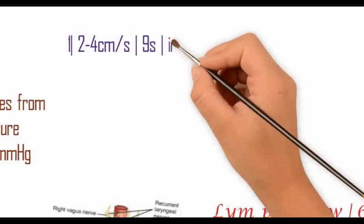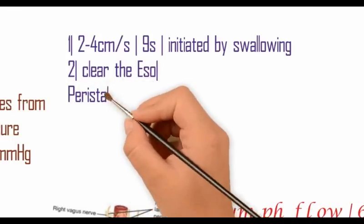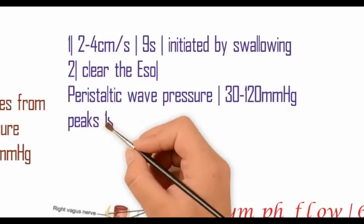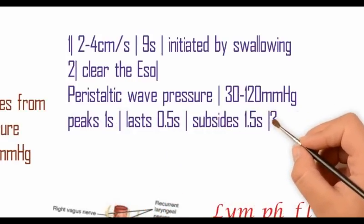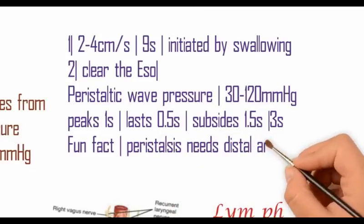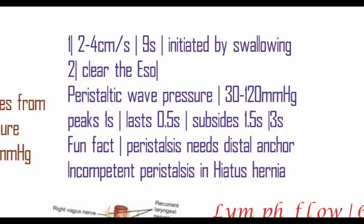A primary peristaltic wave is initiated by swallowing, whereas the secondary peristaltic wave occurs to clear the esophagus. A wave of peristalsis exerts a pressure of 30 to 120 mmHg, travels at 2 to 4 cm per second, and traverses the whole esophagus within 9 seconds. Peristalsis requires a very strong distal anchor; in cases of hiatus hernia, there is a poor distal anchor, leading to poor peristalsis.